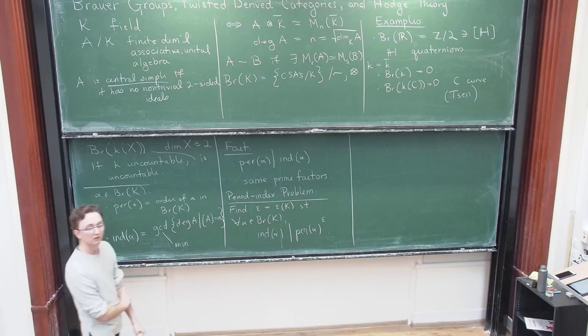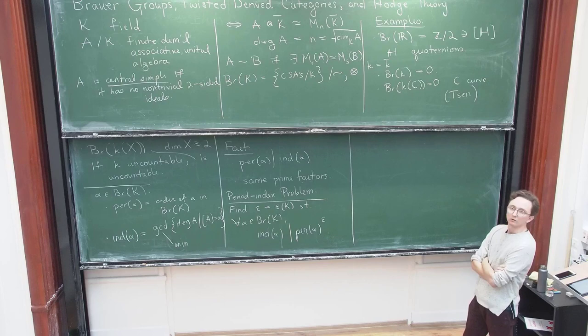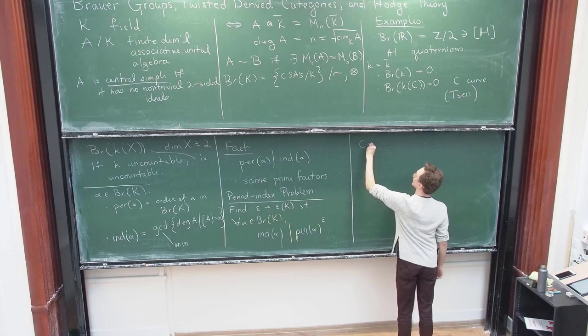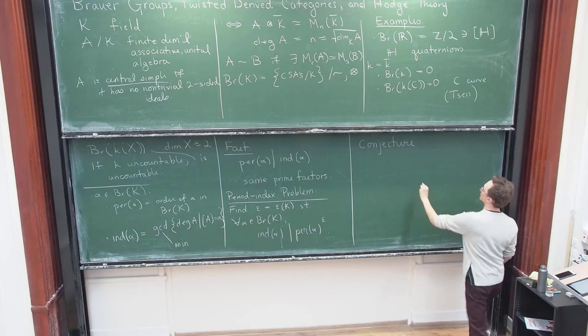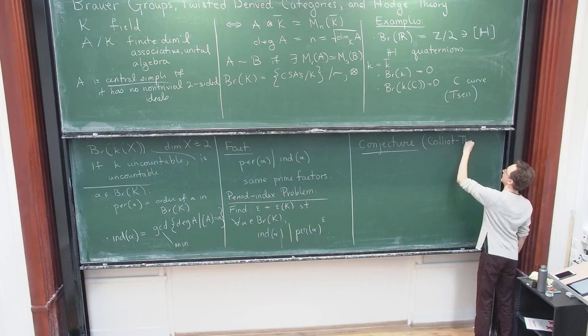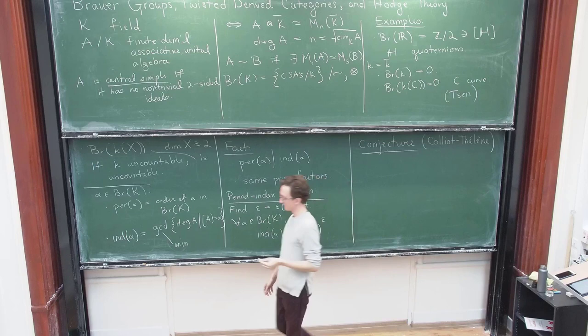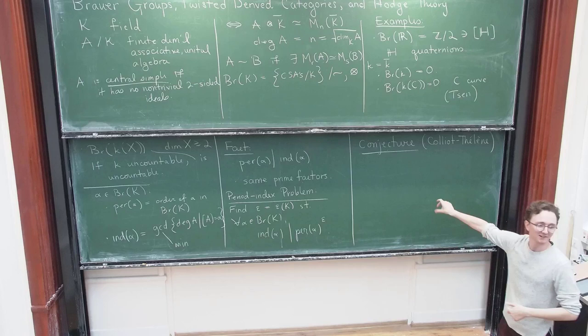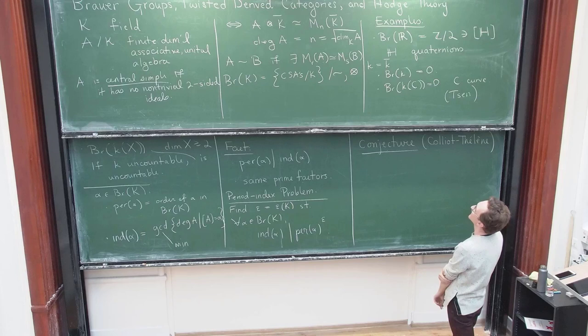And it goes back to work in the 1930s on Brouwer groups of global and local fields. So I said I would be talking about Brouwer groups of function fields. So let me tell you what the basic conjecture is. So this is conjecture. This is basically the period index conjecture. And it was first, it was actually folklore for quite a long time, I think, but it was first written down by Colliot-Thélène. It was written down in unpublished notes for a topics seminar. They were on his website for many years, but he actually uploaded them to the archive on like Monday or Tuesday of this week. And you're like, what is this thing? It was where this conjecture first. So that's easier to find now.